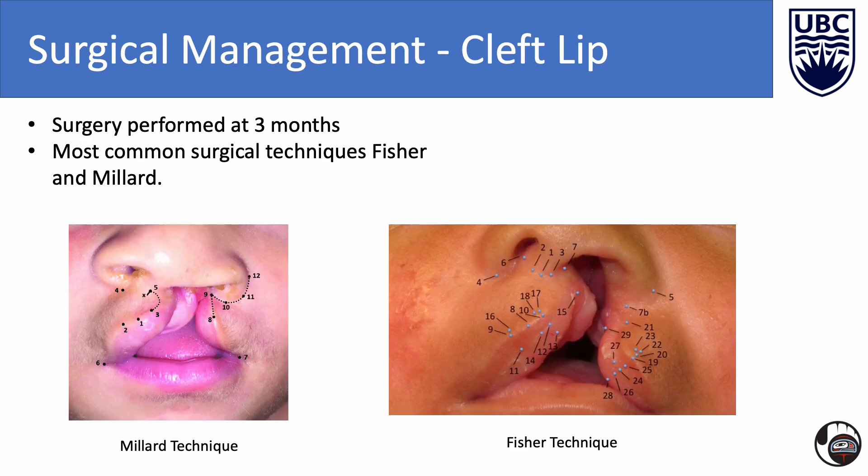The surgery for the cleft lip is done around 3 months. The two most common surgical techniques are the Tennison-Randall and Millard. The goals are to create a symmetrical upper lip, restore the lip's functions, and minimize scarring.